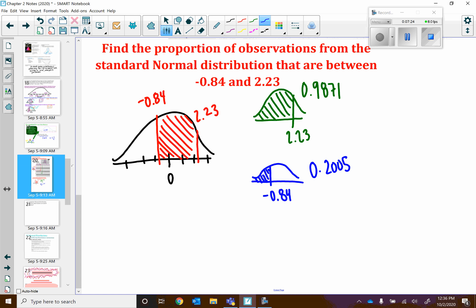Well, if I want to find this right here, how am I going to do it? I will take the 98.71% minus this area right here, the 20.05. When I do that subtraction, I get 78.66, that's technically percent, or 78.66% of our values are between negative 0.84 and positive 2.23.